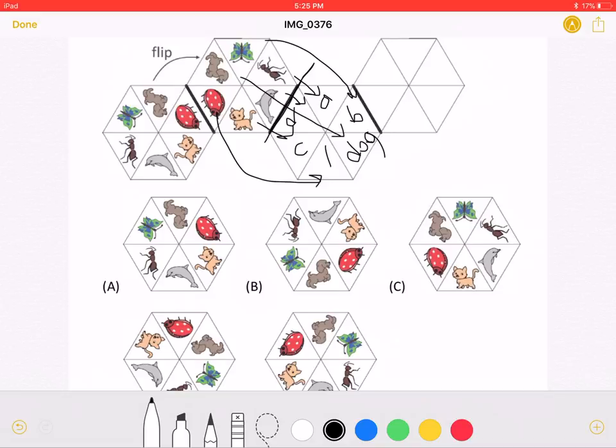Now we must do this one more time to find our answer. Now we will be flipping over this line of symmetry instead. So the butterfly will be flipped over here, the ant over here, the dolphin over here.